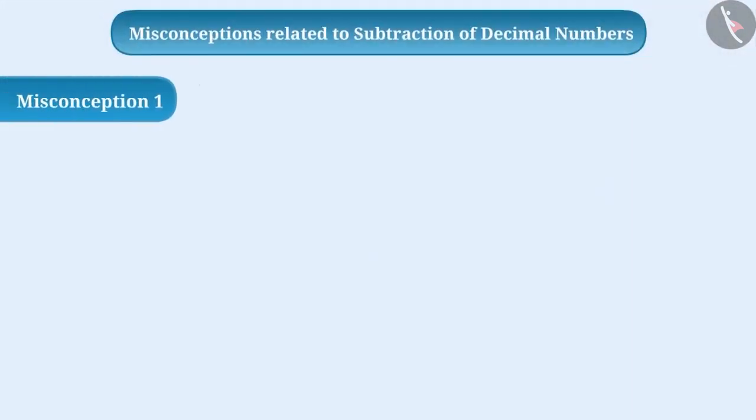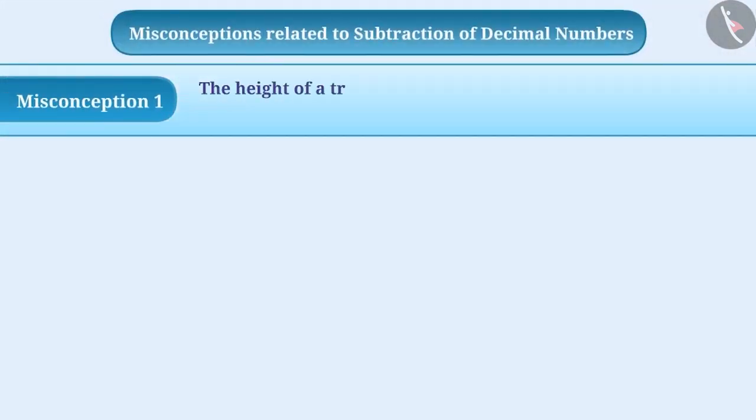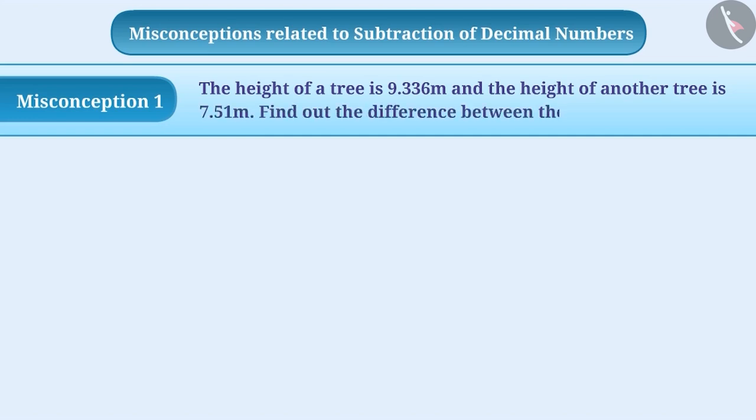Misconception 1. The height of a tree is 9.336 meters and the height of another tree is 7.51 meters. Find out the difference between these two heights.